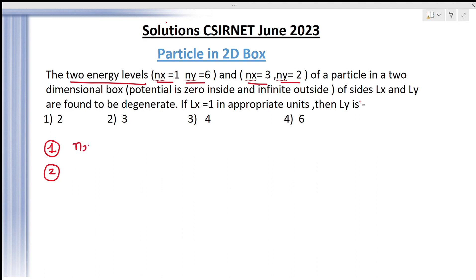So I am writing here: NX is given to you 1 and NY is equal to 6. For the second level you have NX is equal to 3 and NY is equal to 2, of a particle in a 2D box. You have given the 2D box with potential 0 inside and infinite outside, as you know.